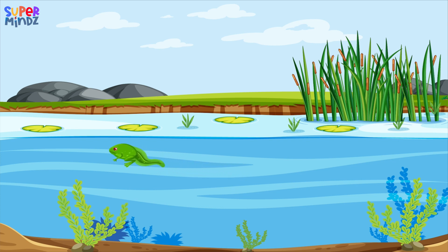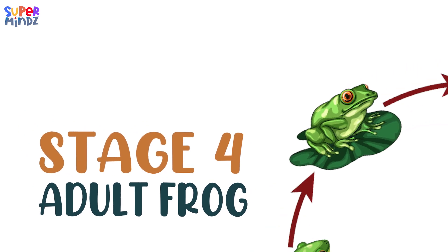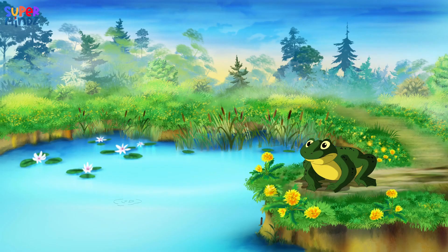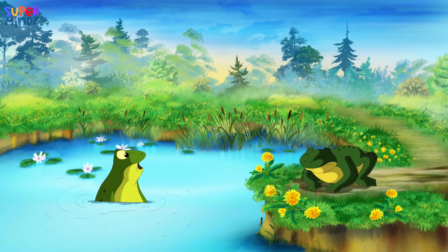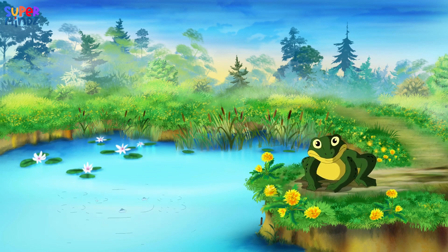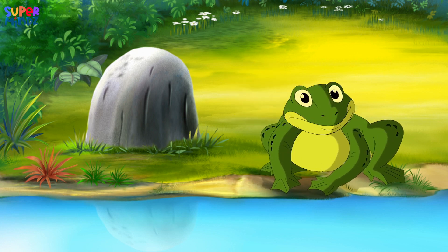Their tails shorten and their legs start to develop. At this stage they're called froglets. Stage four: Adult Frog. Finally, our froglet grows into an adult frog — it loses its tail and develops lungs for breathing air.